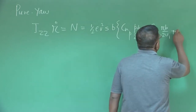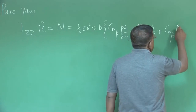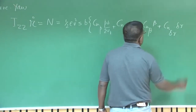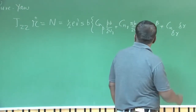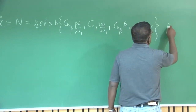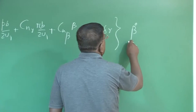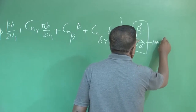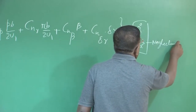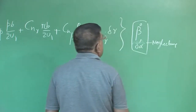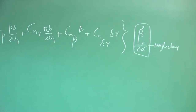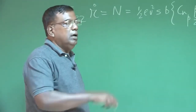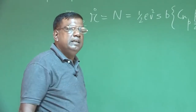Plus Cn_delta_r * delta_r. I am neglecting any contribution due to beta_dot or delta_a. Beta_dot is like alpha_dot — alpha_dot for the longitudinal plane, and beta_dot is because of sidewash, the rate of change of sidewash.